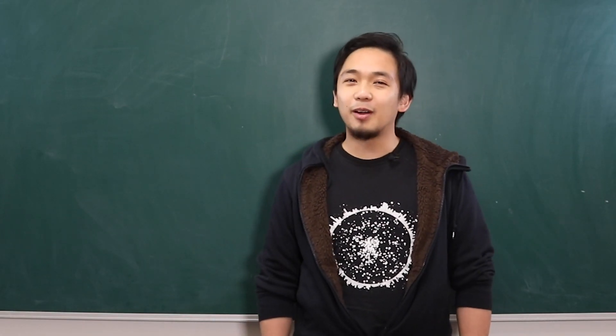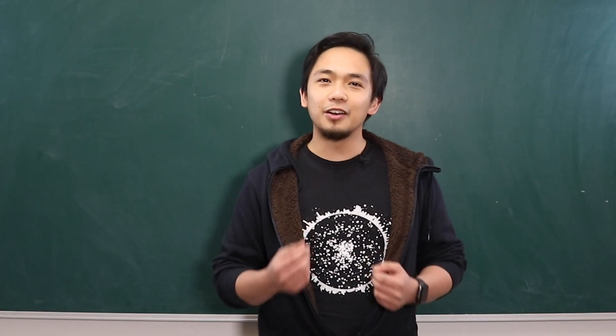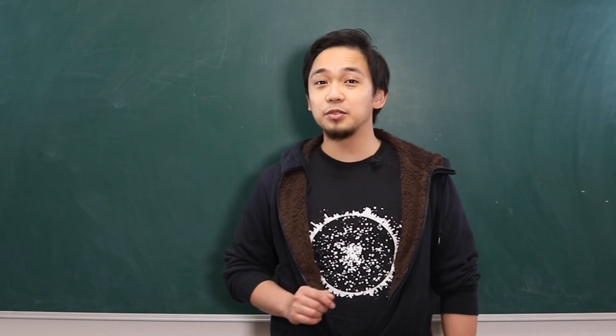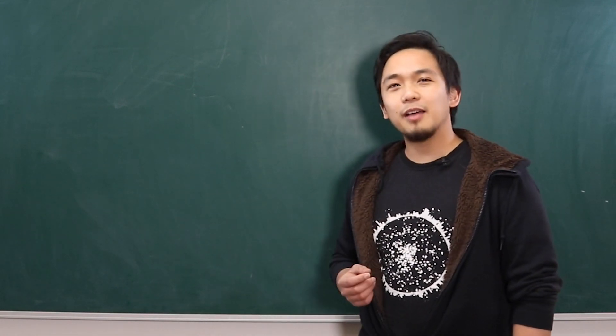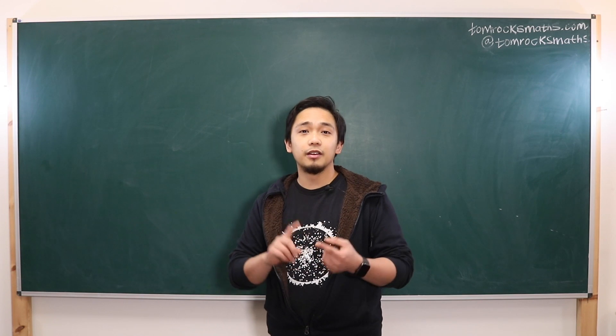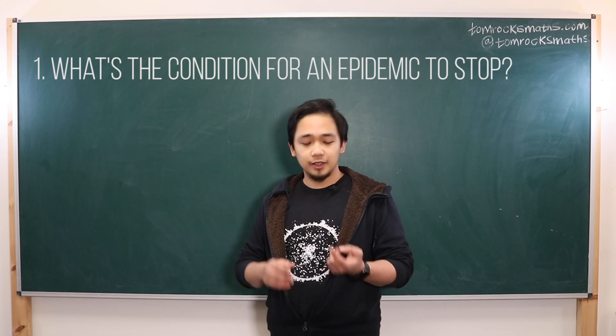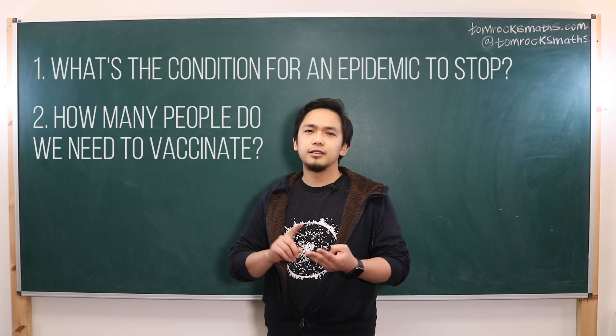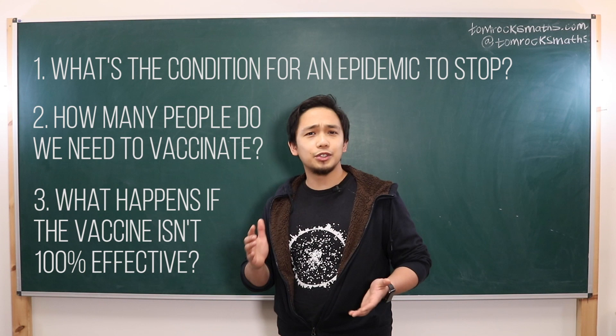Hi, I'm Gabriel. I'm a particle physics DPhil student and in my work in physics we try to build models to understand how and why the universe works. Now after watching one of Tom's videos I learned about the SIR model and I thought, what would happen if we tried to introduce vaccines into this model? Three questions that I'm interested in are: number one, what's the condition for an epidemic to stop? Number two, how many people do we need to vaccinate in order to get there? And number three, if a vaccine is not a hundred percent effective how does that change the equation?